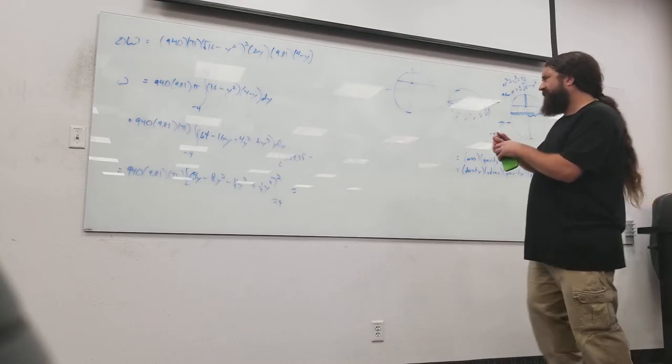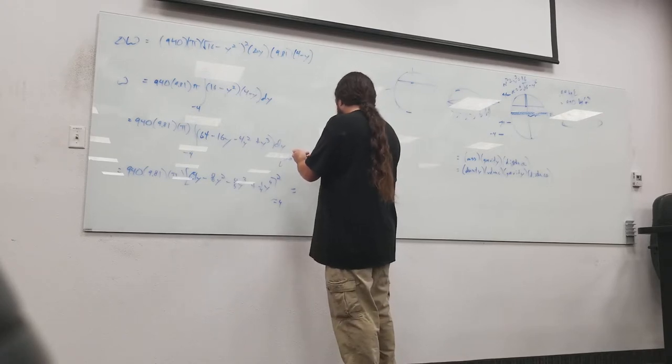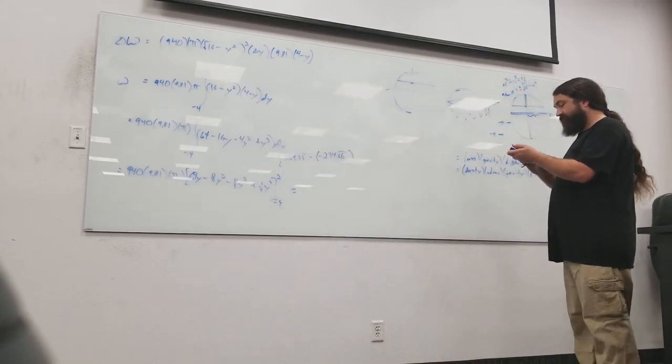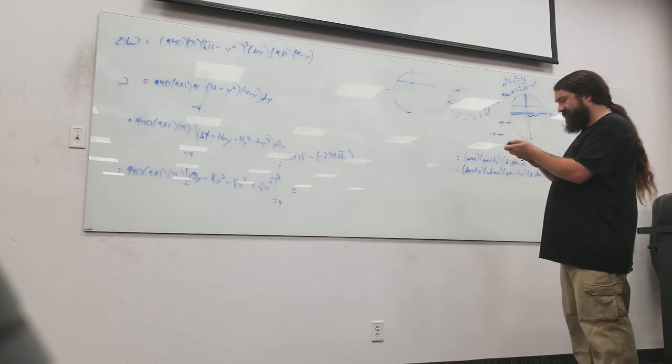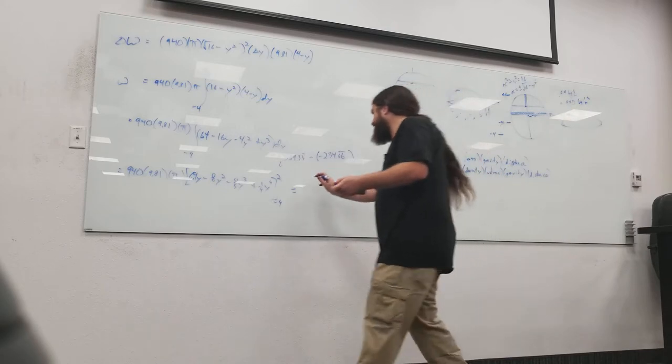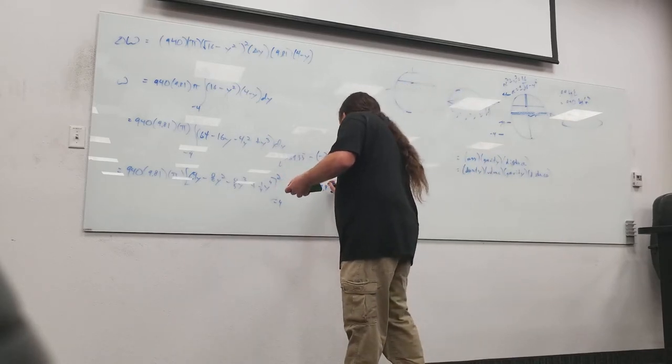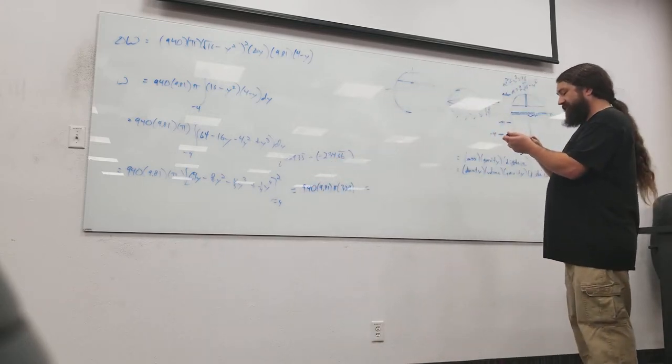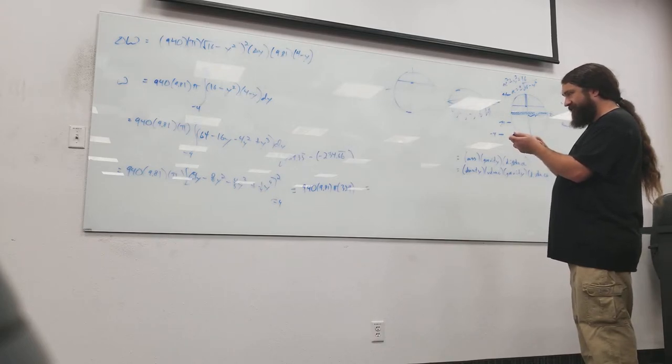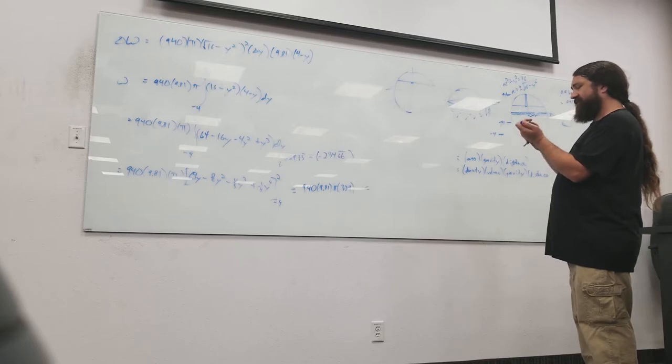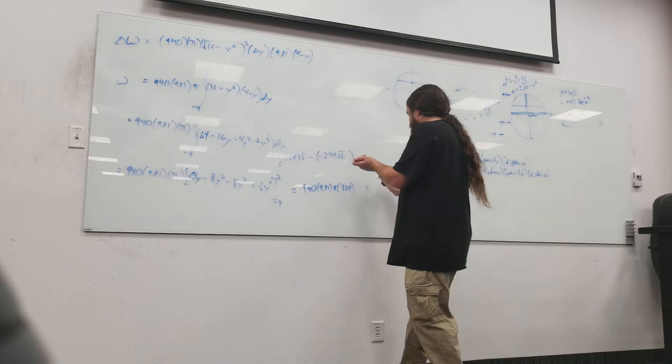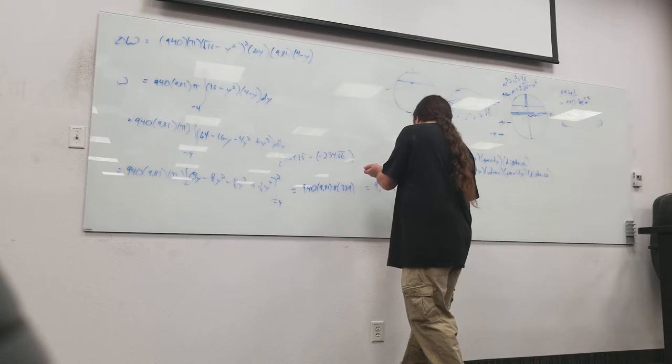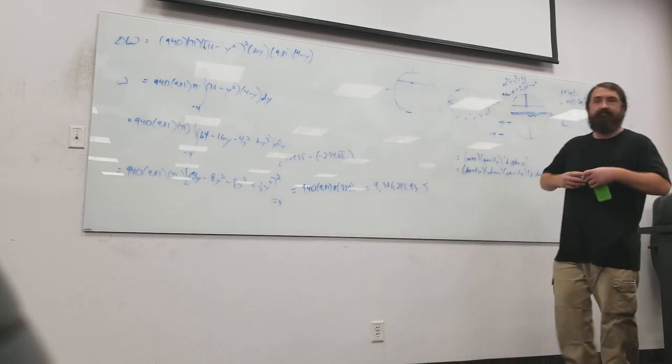Okay. So, I got 89 point repeating 3s minus negative 234 point repeating 6s. Something else can cancel out here. So, plus give me that. 324. Okay, so this is 940 times 9.81 times pi times 324. All right. So, times 9.81 times pi is 9,386,241.93 joules.